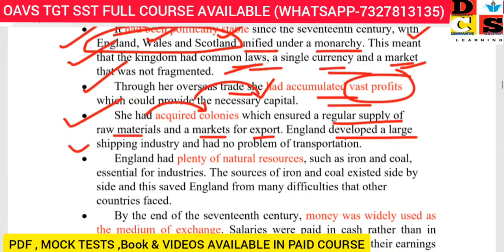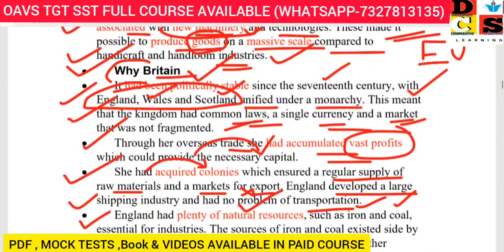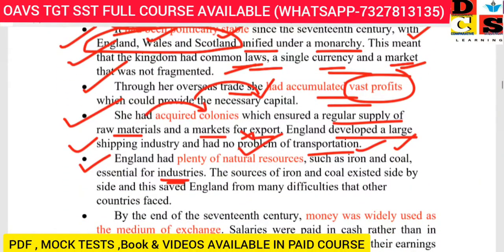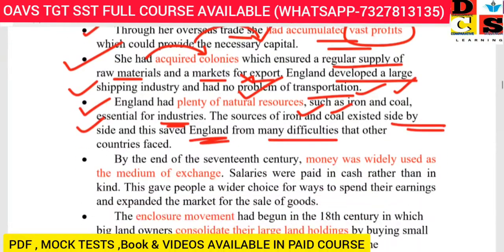England developed a large shipping industry and had plenty of natural resources like iron and coal. The iron industry and coal sources were located side by side, which saved England from many difficulties that other countries faced. This was a key reason why the Industrial Revolution started in England.